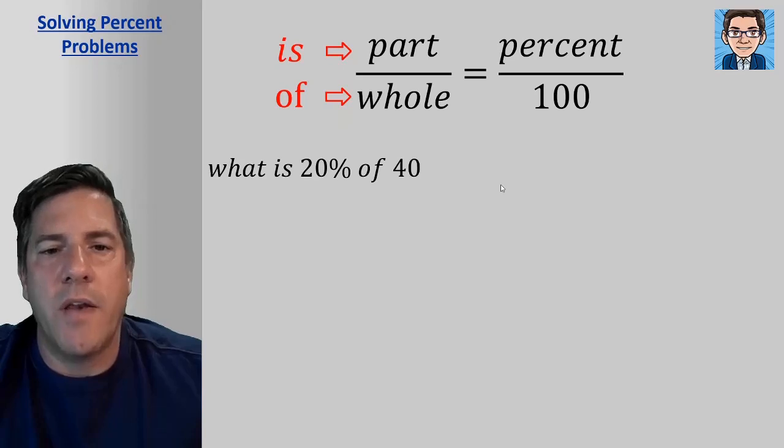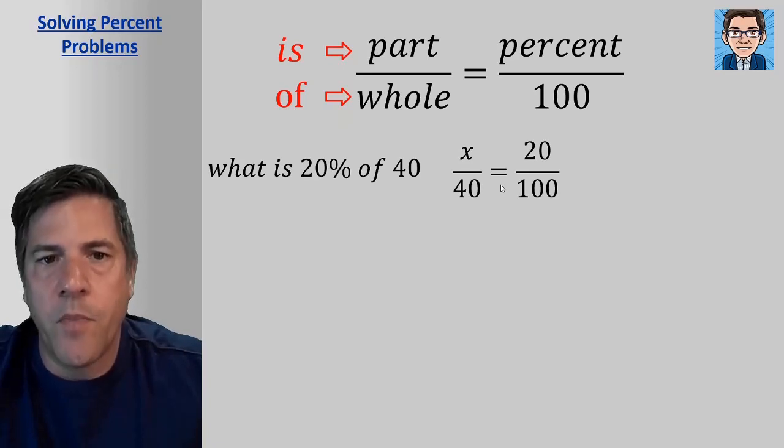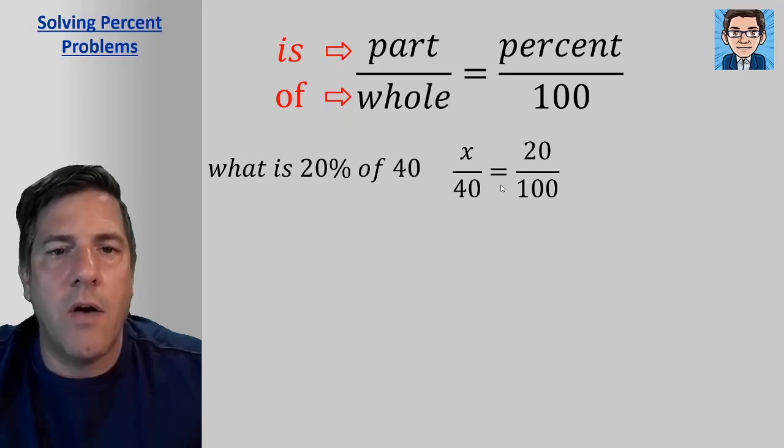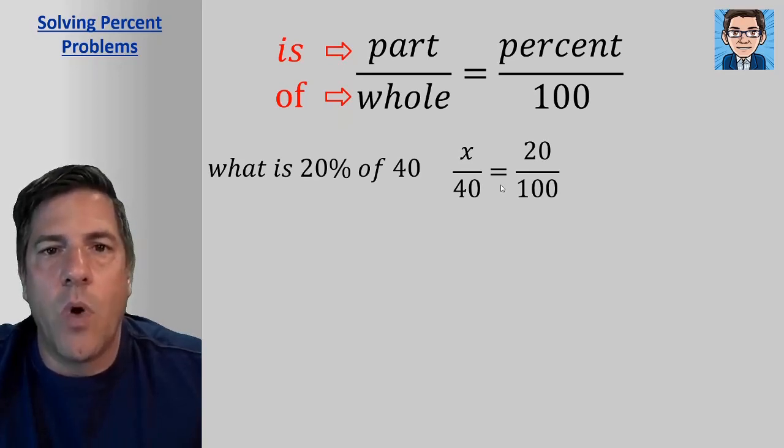What is 20 percent of 40? So the way we would set up this is x over 40 equals 20 over 100. We don't know what the part is, so the part is x. The whole is 40. The percent is 20, and it's always over 100 for a percentage. So the is over the of, it says what is, so we don't know the is part. And the of, it says of 40. So that just gives you a little trick as far as what goes in the part and what goes in the whole.